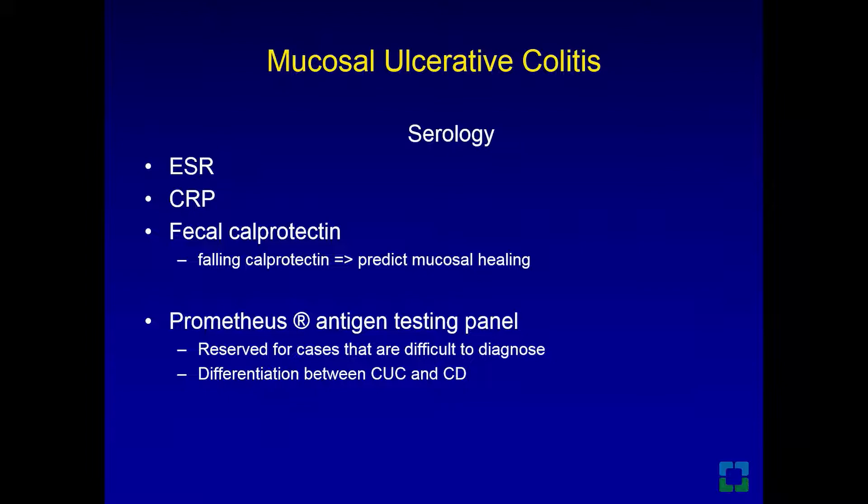A falling calprotectin may predict mucosal healing. There is also the Prometheus antigen testing panel, reserved for cases that are difficult to diagnose, and it can help differentiate between ulcerative colitis and Crohn's disease.